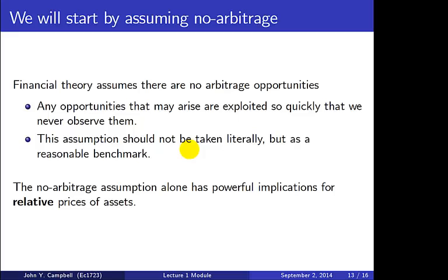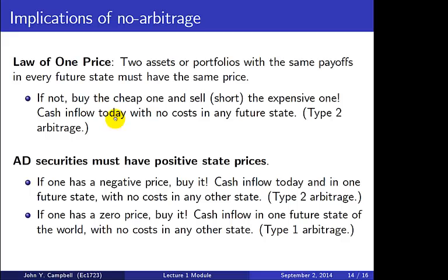One doesn't want to take that too literally — there may in fact be riskless profit opportunities that pop up. Nonetheless, it's a reasonable benchmark to assume them away; we shouldn't think financial markets allow this to happen very often or for very long. It turns out that the no-arbitrage assumption all by itself has powerful implications for the relative prices of assets. The first implication is called the law of one price, or LOOP.